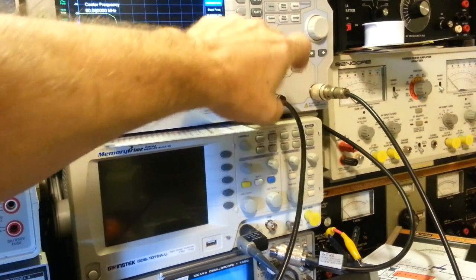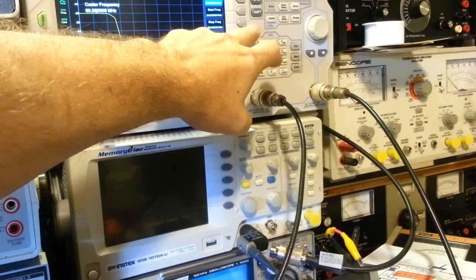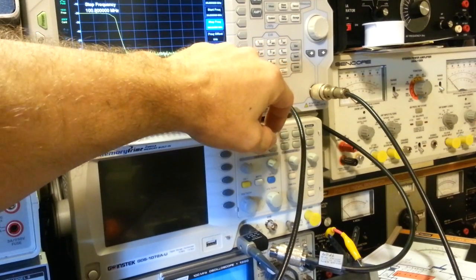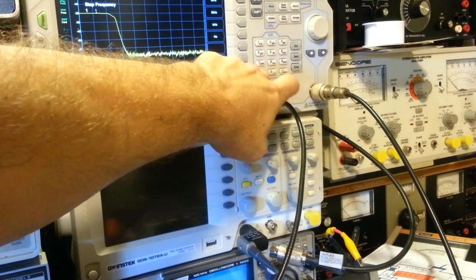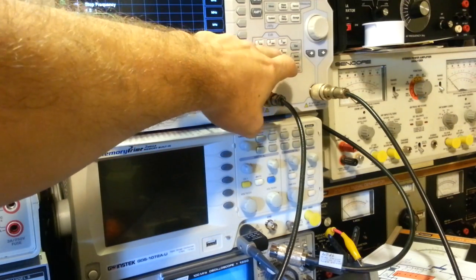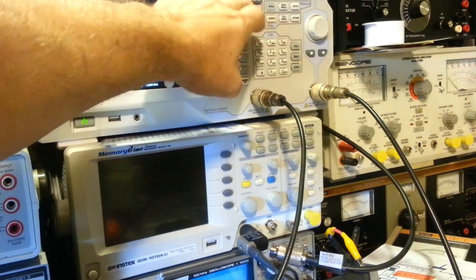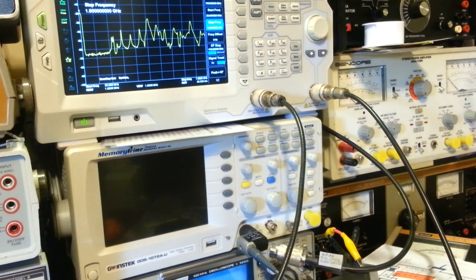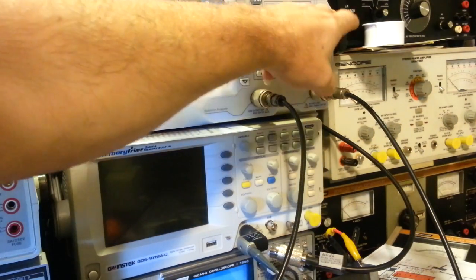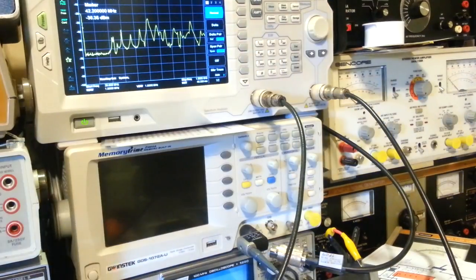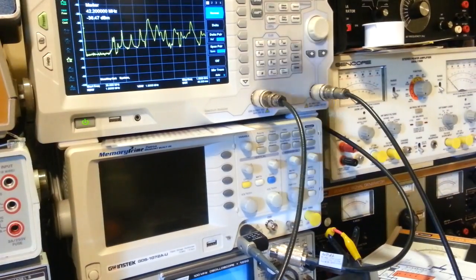Now I'm just curious. Let's go out to stop frequency at the maximum bandwidth of the spectrum analyzer, which is 1.5 gigahertz. Whoa boy, it doesn't do anything for the higher frequencies does it? You got some nasty spikes out there.